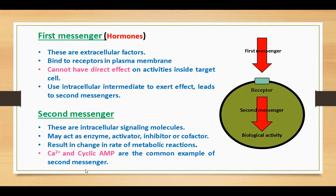Now we'll see the difference between first messengers and second messengers. First messengers are usually hormones — these are extracellular factors that bind to receptors in the plasma membrane, and cannot have a direct effect on the activities inside the target cell. They use intracellular intermediates to exert their effect, leading to second messengers. Second messengers are intracellular signaling molecules. They may act as enzyme activators, inhibitors, or cofactors, resulting in a change in the rate of metabolic reactions.